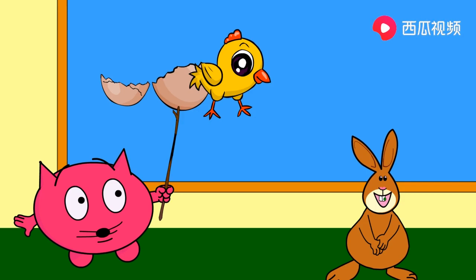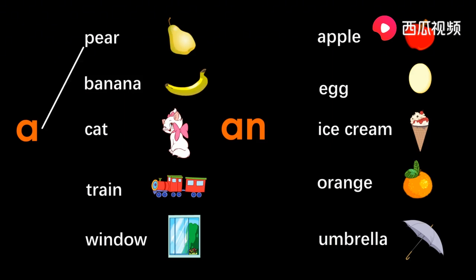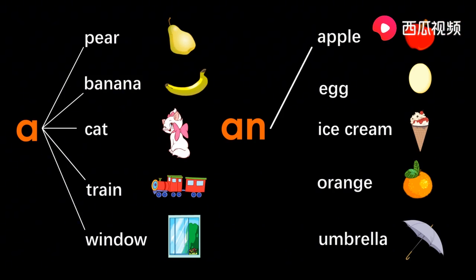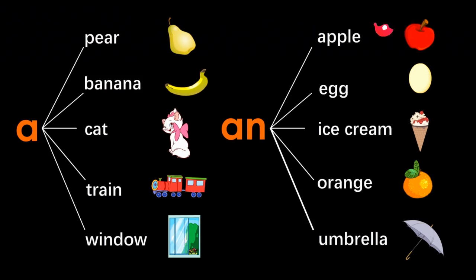再来一遍，请和我一起读。 A pear. A banana. A cat. A train. A window. An apple. An egg. An ice cream. An orange. An umbrella.